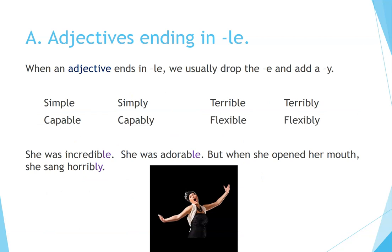A. Adjectives ending in -LE. When an adjective ends in -LE, we usually drop the E and add a Y. For example: simple → simply, terrible → terribly, capable → capably, flexible → flexibly. She was incredible. She was adorable. But when she opened her mouth, she sang horribly.